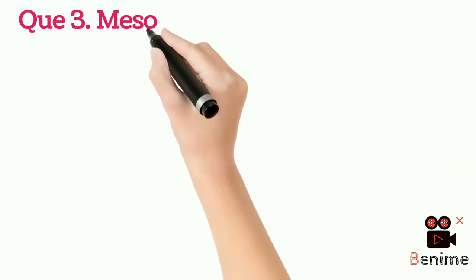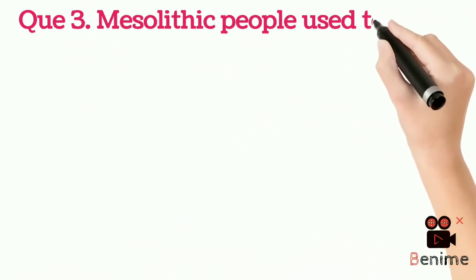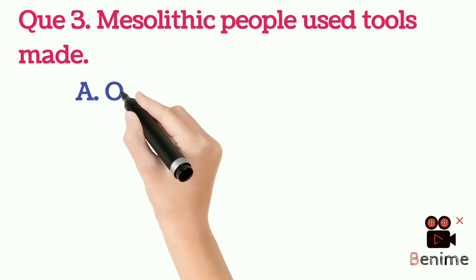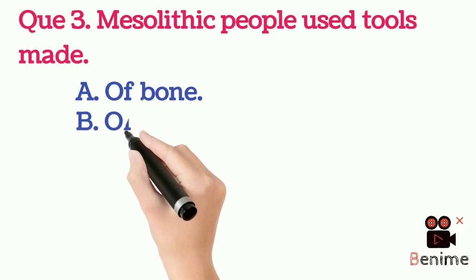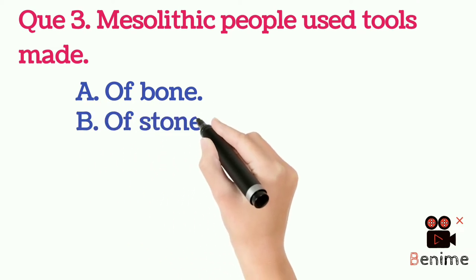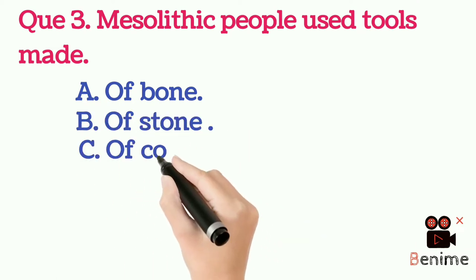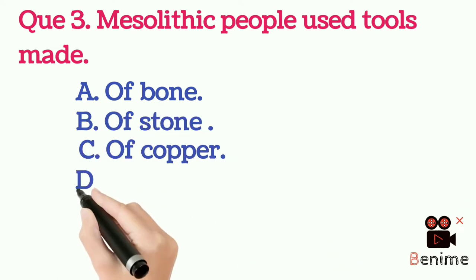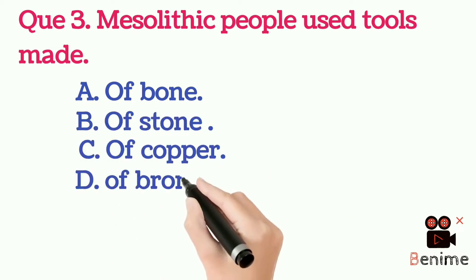Question 3: Mesolithic people used tools made of — A. Bone. B. Stone. C. Copper. D. Bronze. Answer B: Stone.